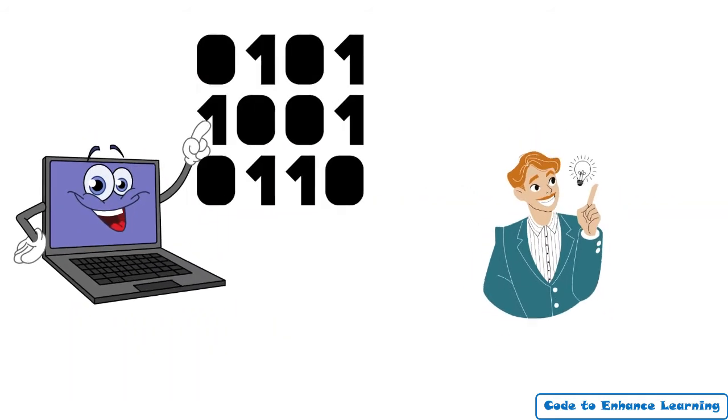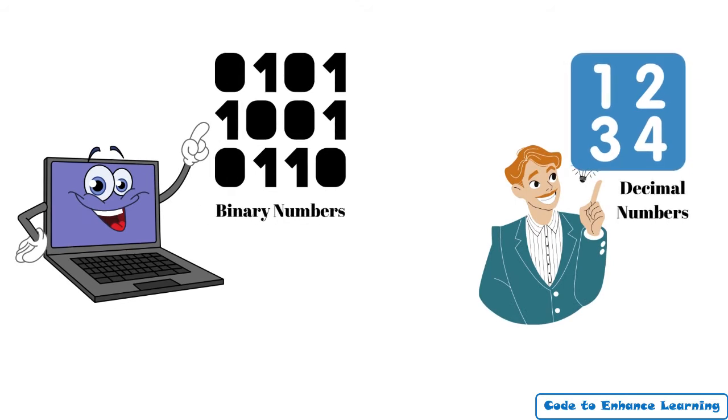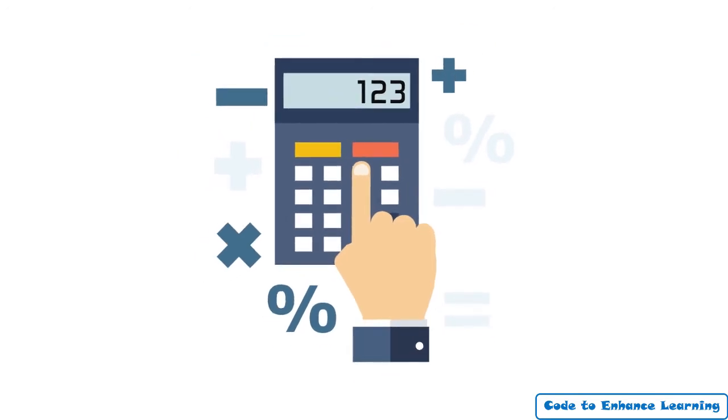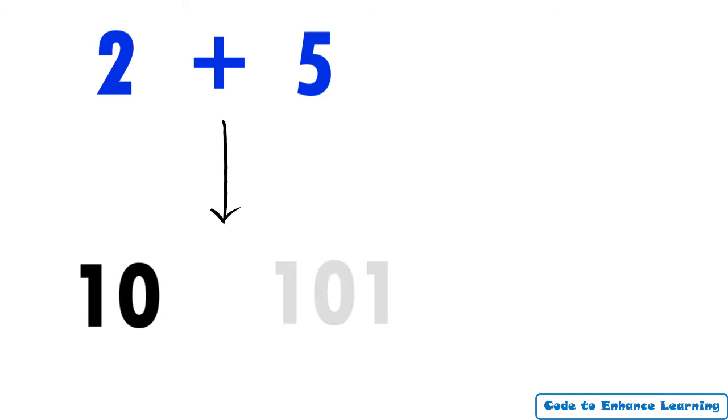We have learned about binary numbers. Now let's learn how computers convert binary numbers into decimal numbers which we humans understand easily. Let us take an example. Suppose you are using a calculator application on your computer and you perform an addition of 2 plus 5. Now a computer will convert 2 and 5 into its corresponding binary format, a sequence of zeros and ones. 2 will be converted to 10 and 5 will be converted to 101 in binary format.